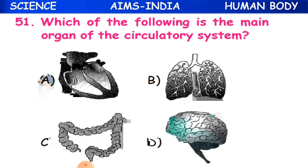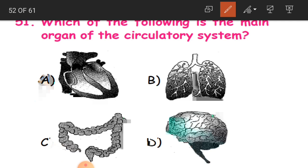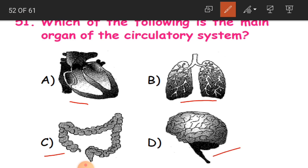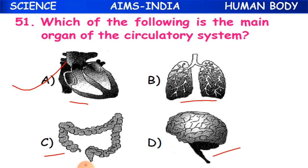Question 51: Which of the following is the main organ of the circulatory system? In the circulatory system, blood transports nutrients, oxygen, carbon dioxide, and blood cells. The main organ is the heart - option A - because it pumps blood through blood vessels throughout the whole body.